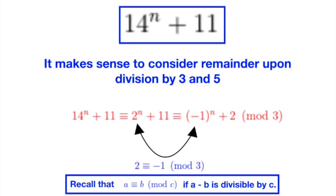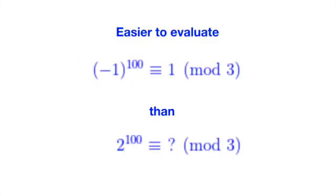You might wonder why we want to replace 2 with minus 1. Note that we do so to simplify the calculations. It would be easier to see that minus 1 power 100 equals 1 than to calculate the remainder of 2 power 100 upon division by 3.